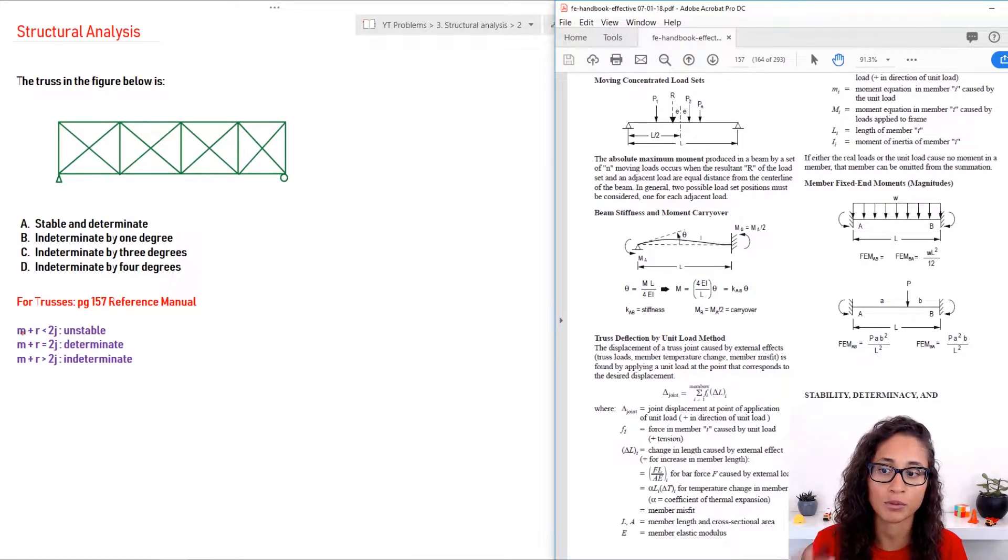So, M is for how many members you have. R, as we said in the previous video, R is usually for reactions, and then J is for joints, right? So, you count how many of these you have, and if it's less than, you have an unstable system. If it's equal, you have determinate, and if it's greater, you have indeterminate.